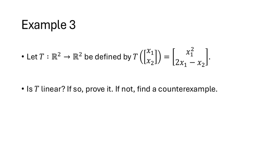Let's do another example. Suppose T of (x1, x2) equals (x1², 2x1 − x2). Is this transformation linear? The x1-squared term looks suspicious — that seems like a nonlinear thing — which leads us to suspect T is not linear and that we should look for a counterexample. We need either vectors u, v where T(u + v) ≠ T(u) + T(v), or a vector u and scalar c where T(cu) ≠ c·T(u).